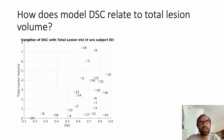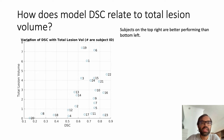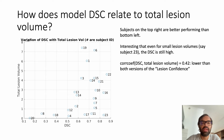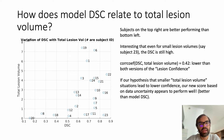Having spoken of dice scores, let's look at how they relate to the total lesion volume. In the scatter plot, subjects on the top right — such as 19 and 6 — are better performing than subjects on the bottom left like 20 and 8. Interestingly, even small lesion volumes, for example subject 23 on the bottom right, show a high dice score. The correlation coefficient of the dice score and the total lesion volume is 0.42, which is lower than both versions of the lesion confidence, indicating that the correlation between data uncertainty and total lesion volume is higher than model performance with respect to total lesion volume.